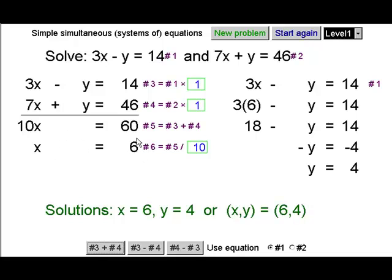Now, if we know one of these values, in this case x, it's very easy to work out what the y value is, the other value. Because we look at equation 1 again, 3x minus y equals 14. But this time, instead of the x, we put 6, because that's what we found out it is. 3 times 6 minus y is 14. 18 minus y is 14. Minus y is minus 4. So y is 4.